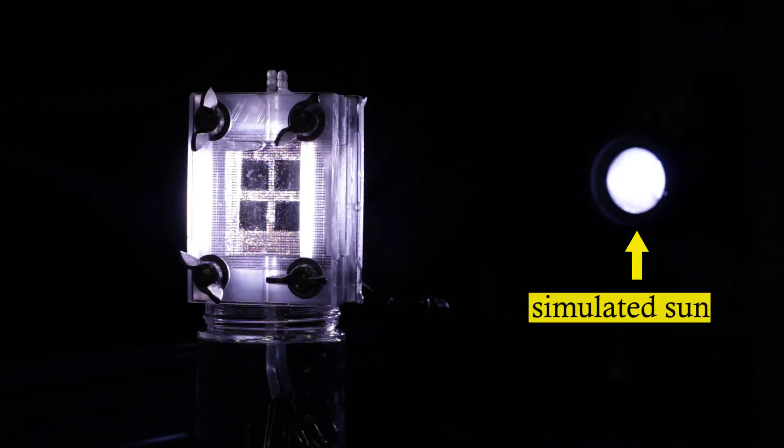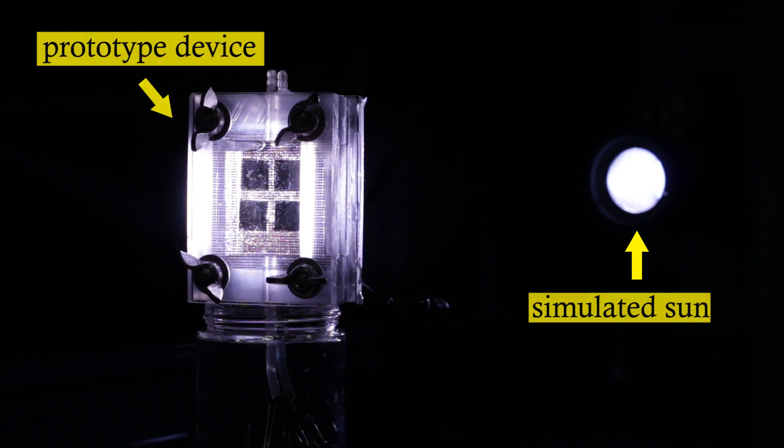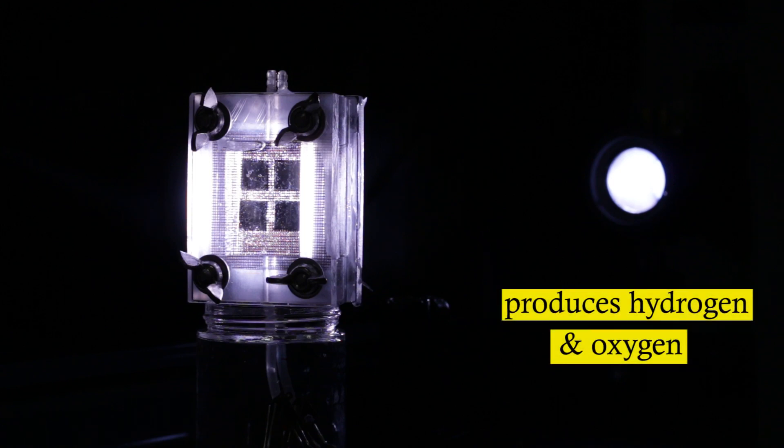Simulated sunlight equal to one sun is illuminated over the prototype device whose energy is converted to produce hydrogen and oxygen by splitting the water molecules.